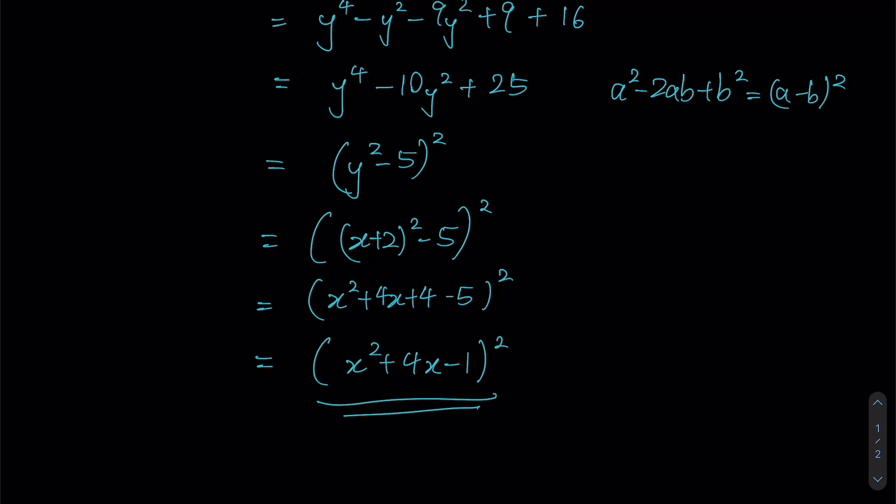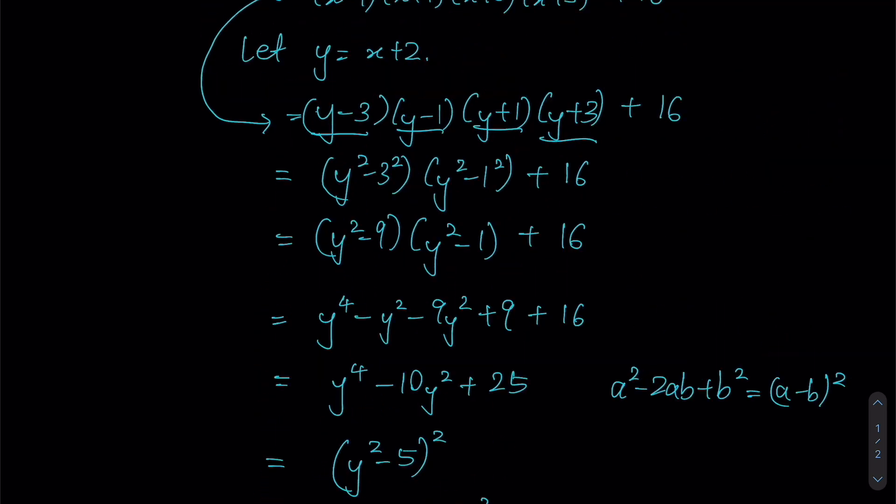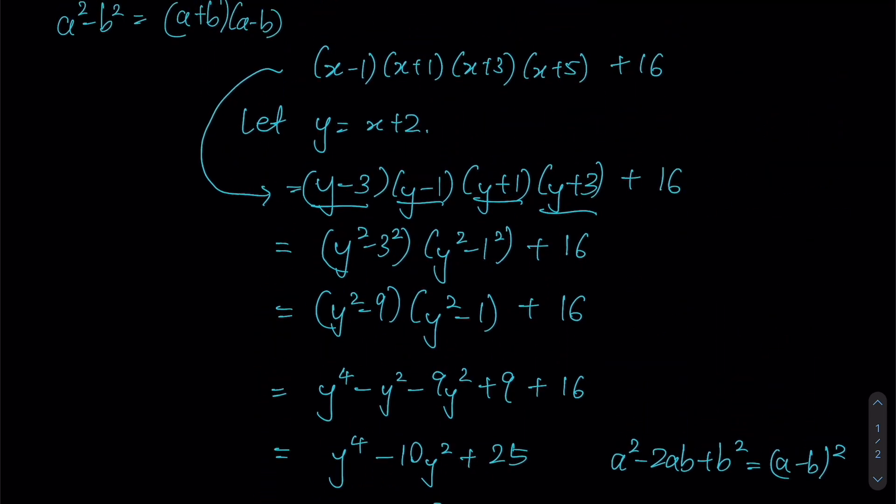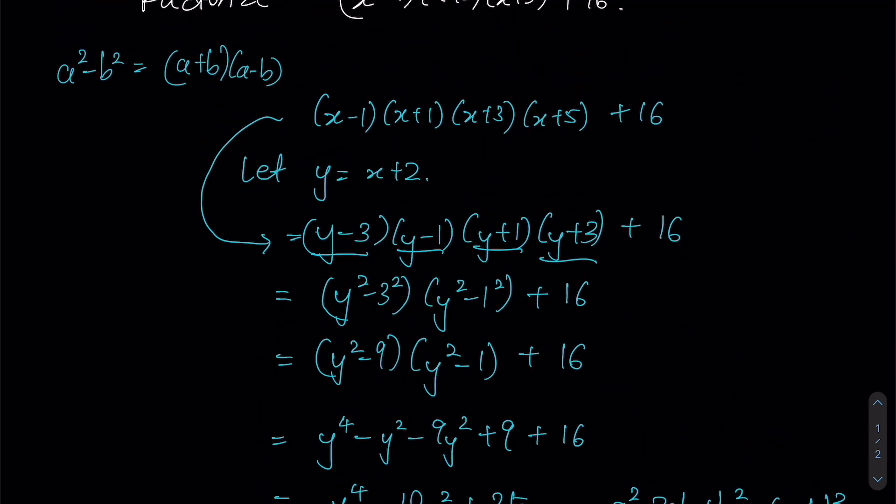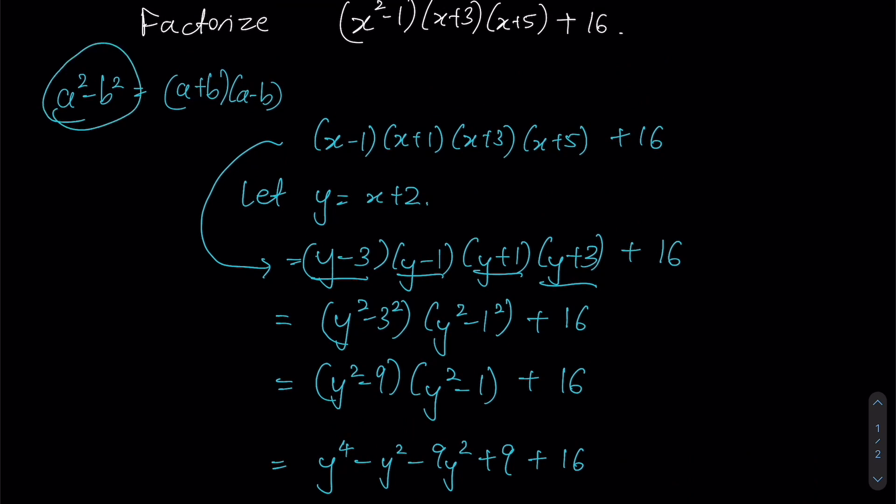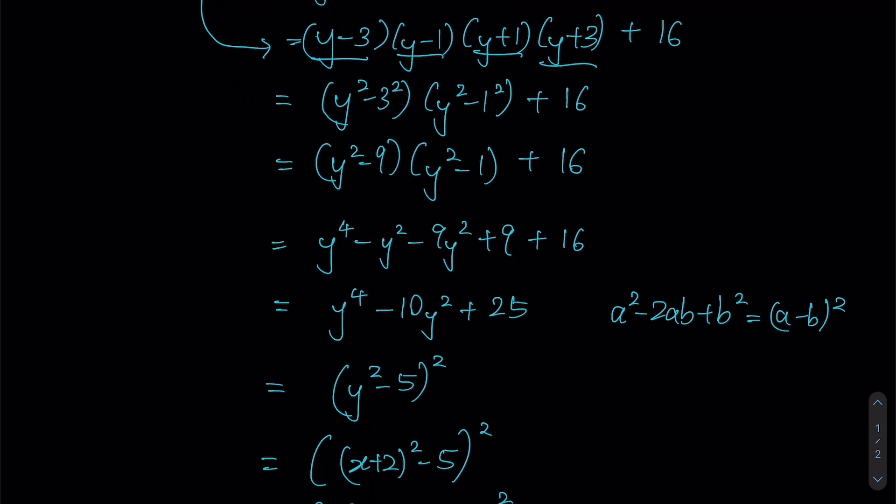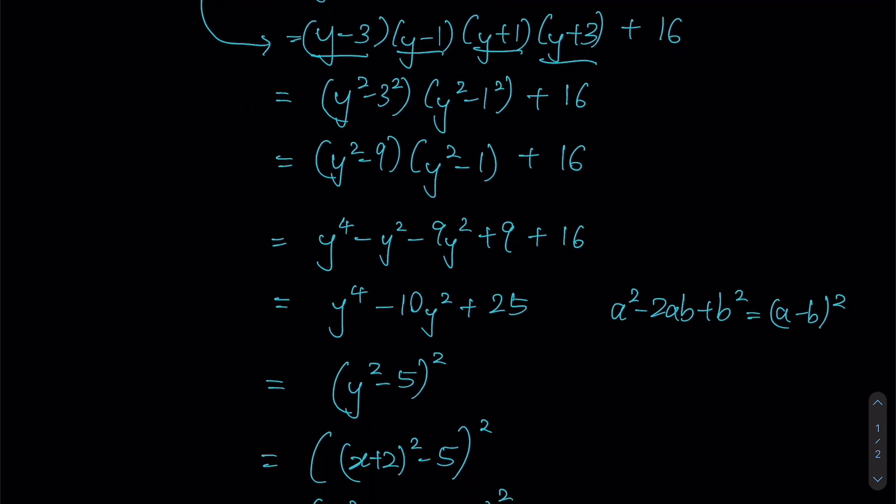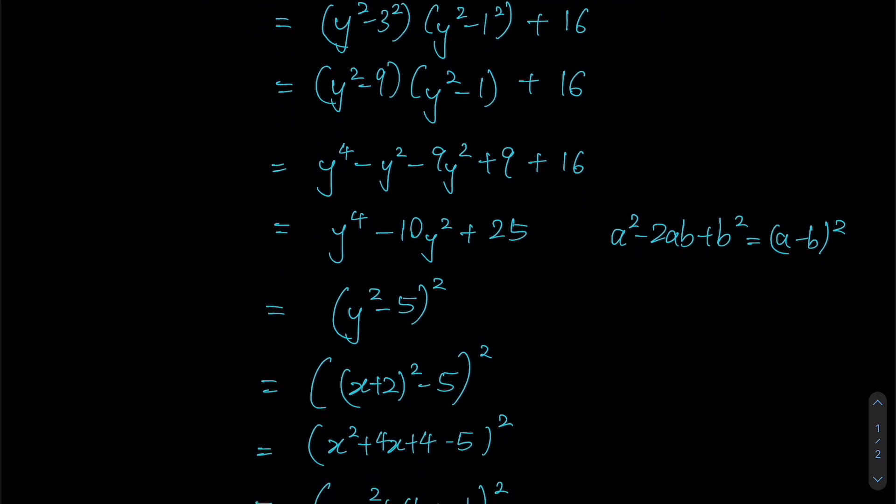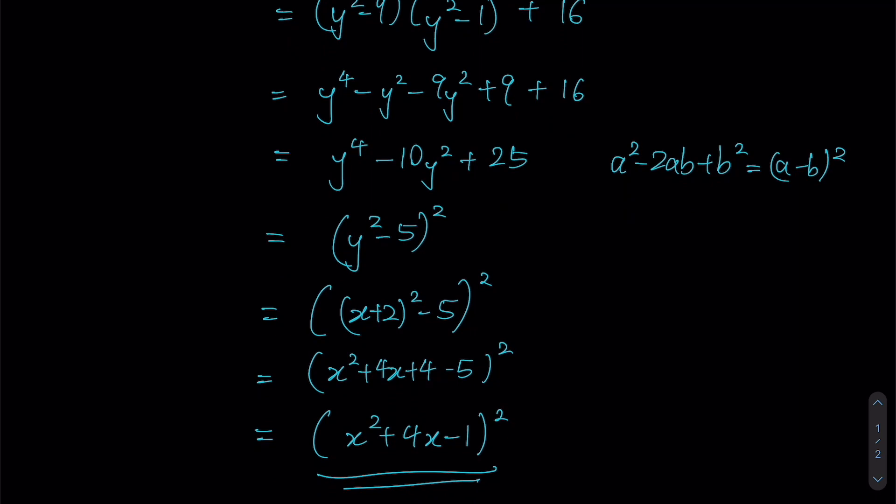Just to recap: we have made use of several identities, the main one being the difference of squares, a² - b², at the start. After recognizing that these four terms have a constant difference, we then made use of a suitable substitution such that we obtain a very symmetrical expression. Then we factorize into this form, switch it back to x, and the rest is pretty mechanical.